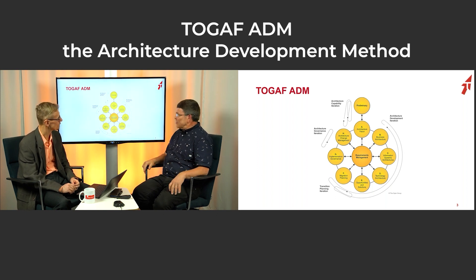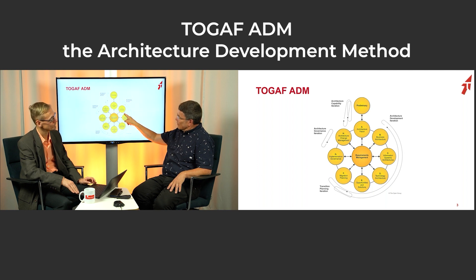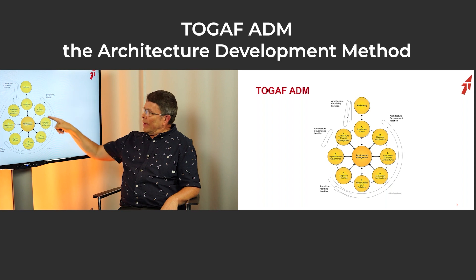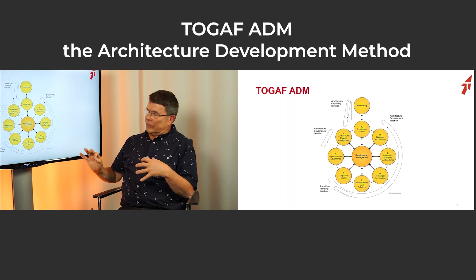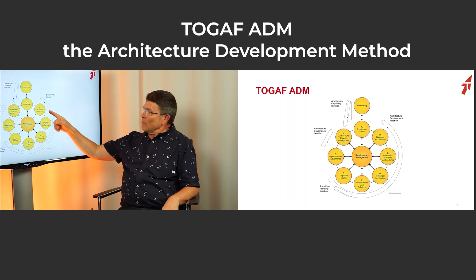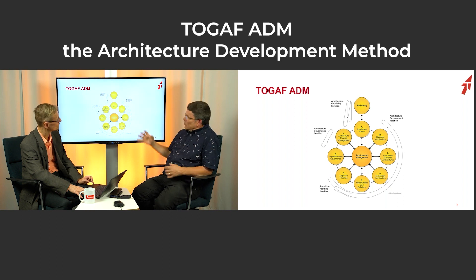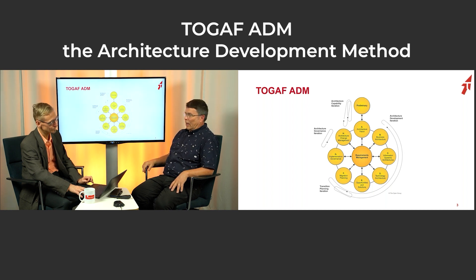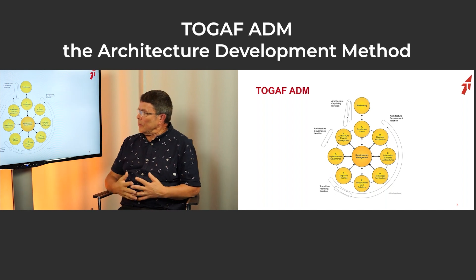In the middle we have something called requirements management, which is also not a phase in the sense that it happens after everything else — it's always there. Arrows go in both directions. Anywhere, anytime an architect creates something new, they need to check the requirements management — is there any requirement I need to be aware of? And it might happen that an architect uncovers a new requirement and puts it into the requirements repository. That's the point of the ADM: a systematic approach divided into phases that gives structure to the architecture work.